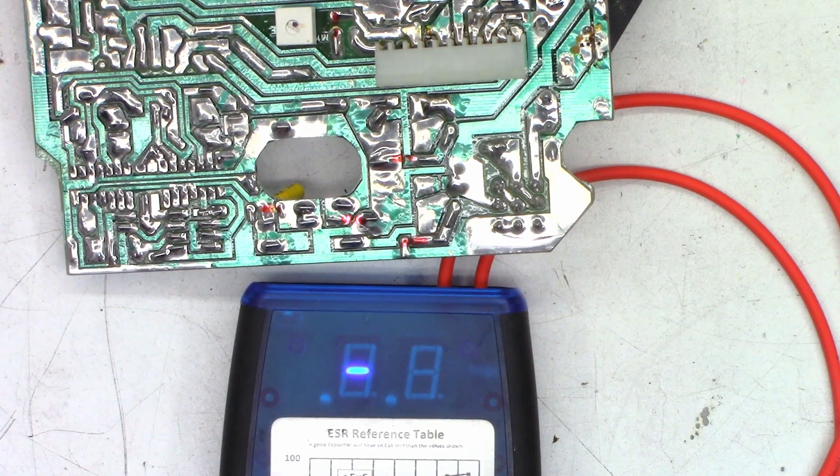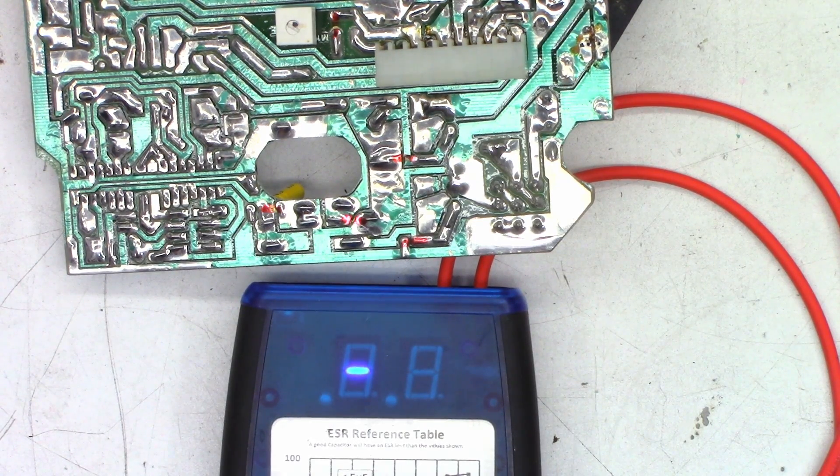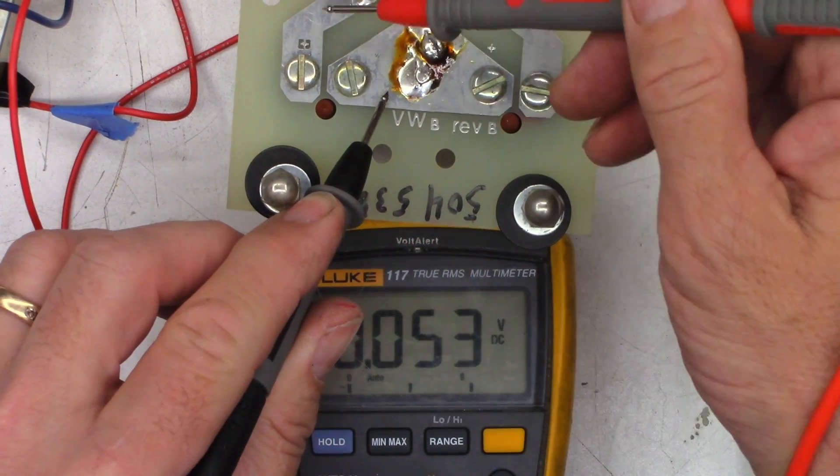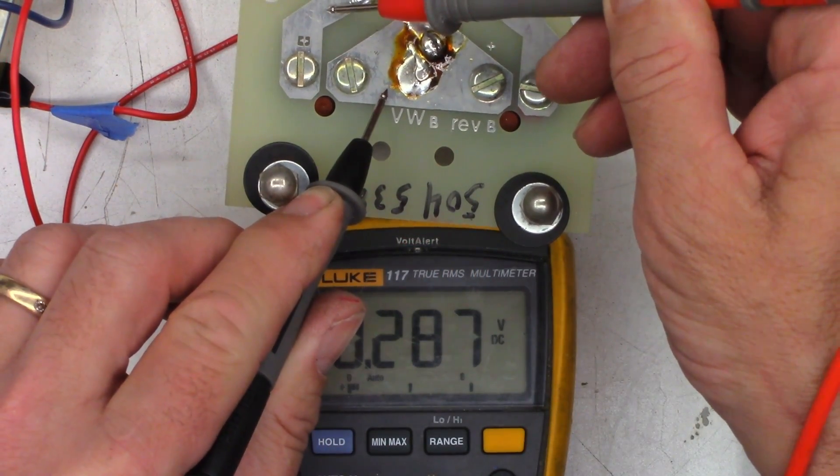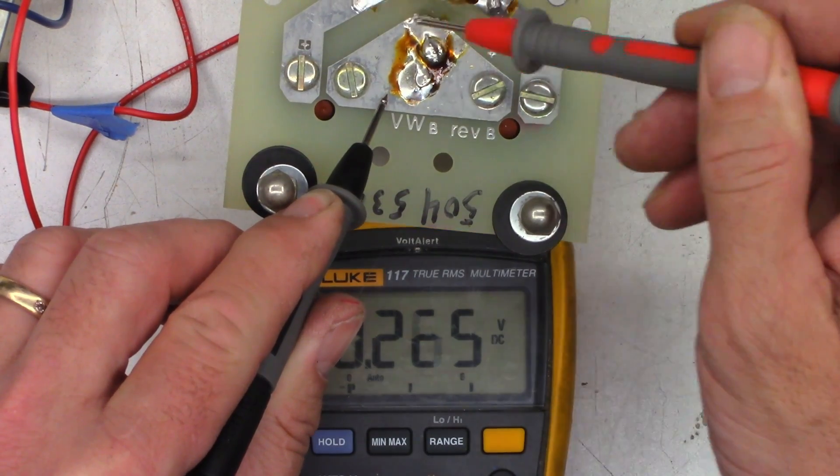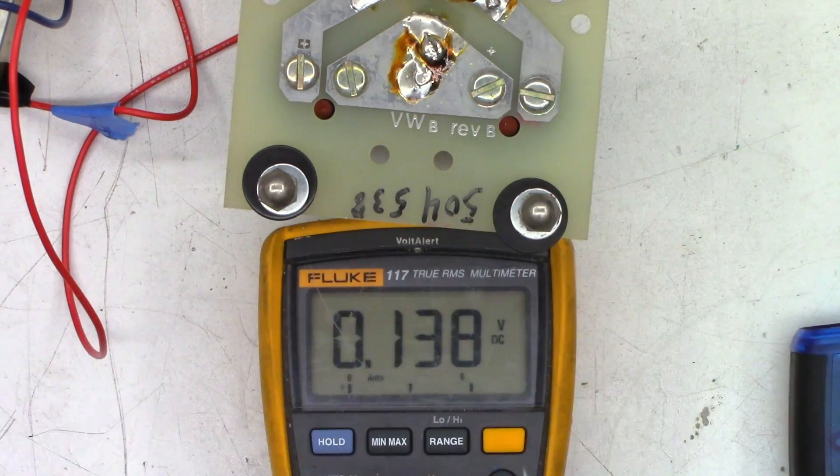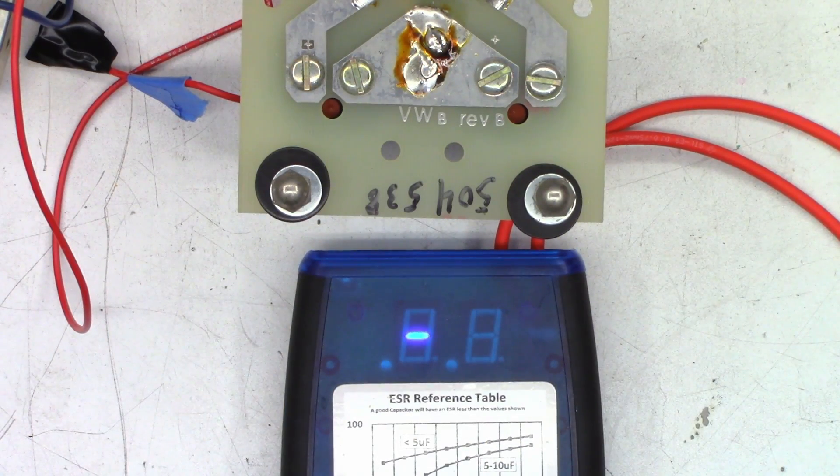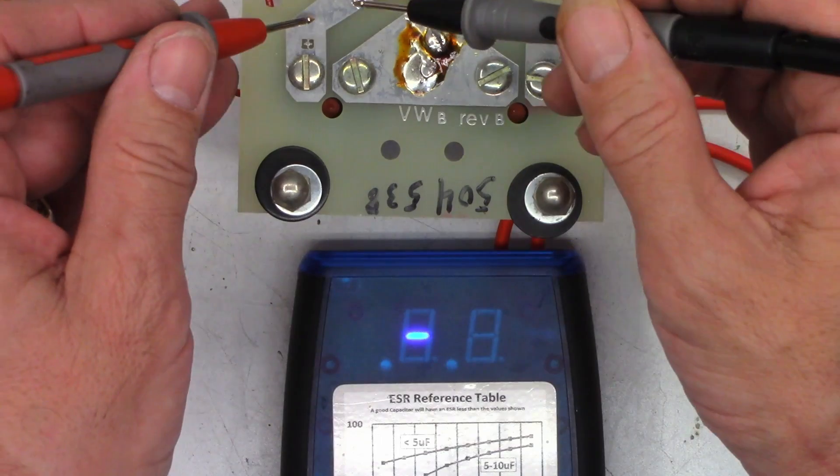Let's go ahead and check the two main filter caps on the rectifier board connected to the transformer next. So once again, I just want to make sure that I have zero volts on these capacitors or close to zero. And I have about two tenths of a volt on each capacitor, so that's not going to damage my capacitor checker.